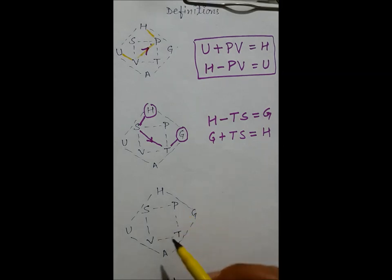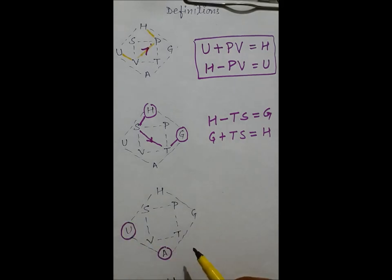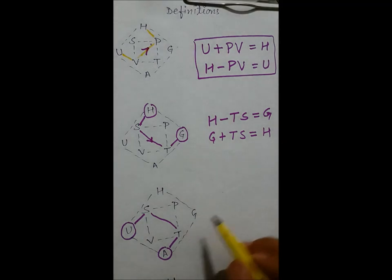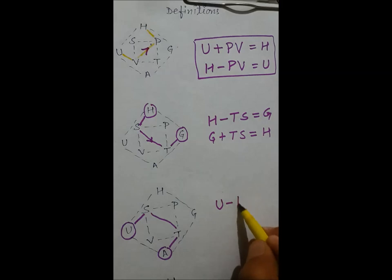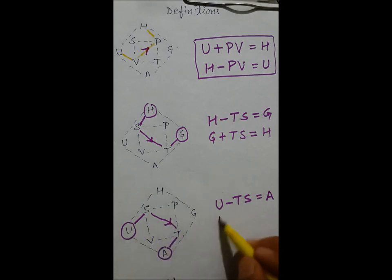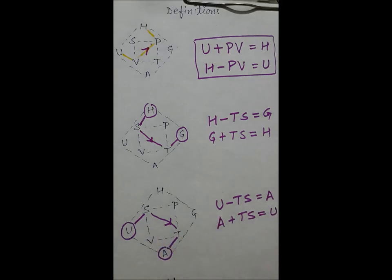Next relation is between U and A. Going diagonally from U to A, the arrow goes down, so U minus TS equals A. Going from A to U, the arrow goes up, giving A plus TS equals U.